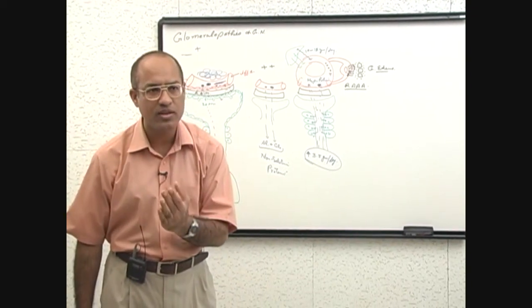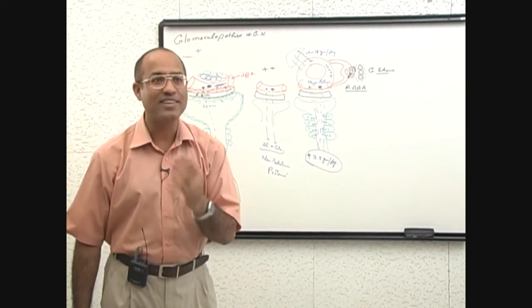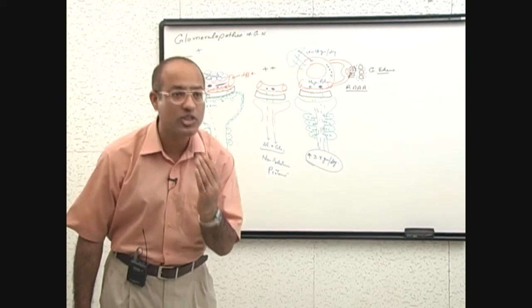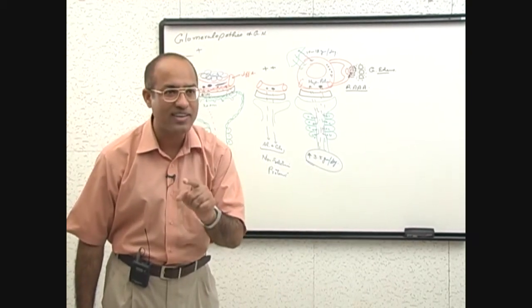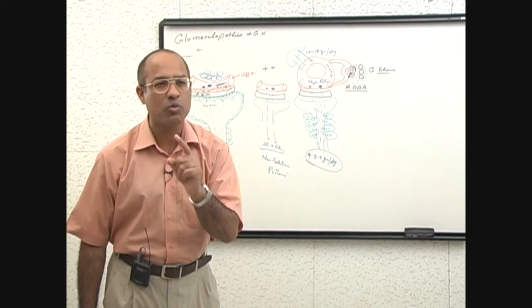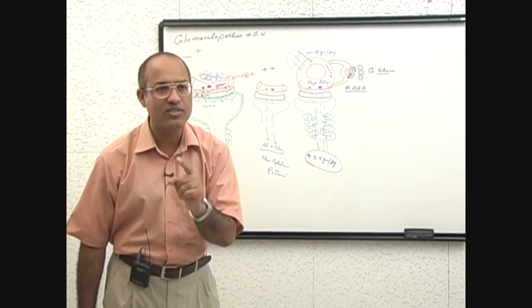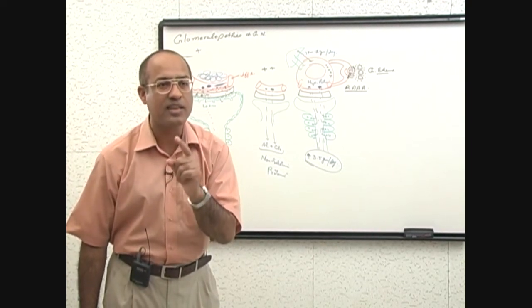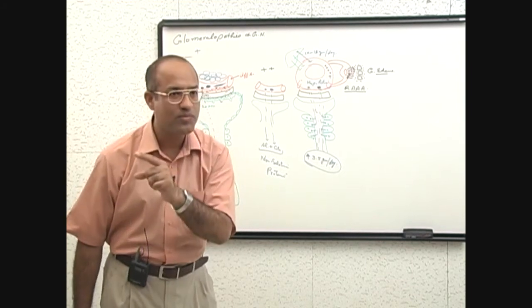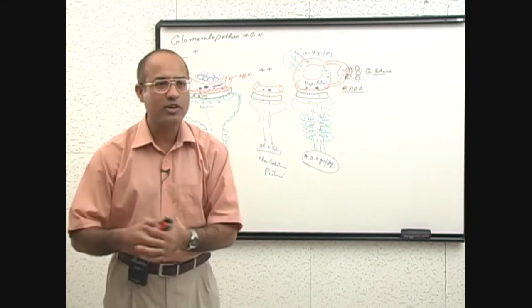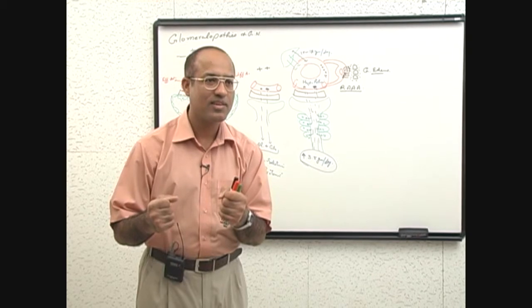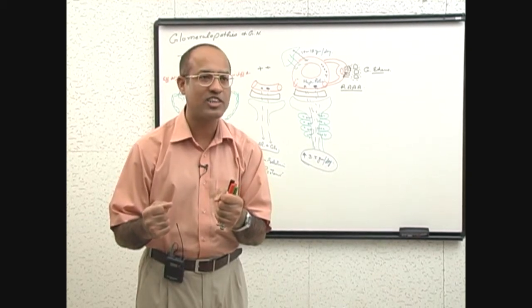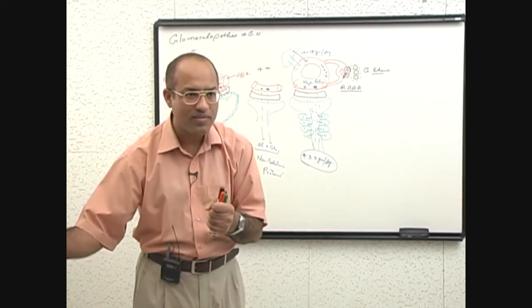And you know the renin in the blood will convert angiotensinogen into angiotensin 1. And angiotensin 1 will be converted by angiotensin converting enzyme in the lungs into angiotensin 2. Angiotensin 2 can constrict the vessels, so increase hydrostatic pressure, so bring more edema.